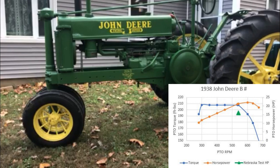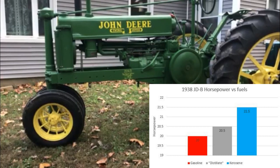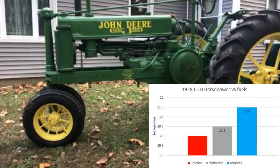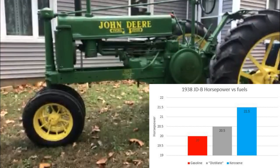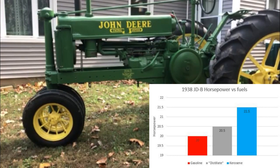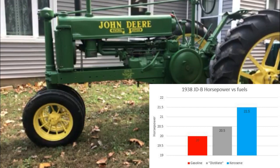Looking at horsepower versus fuels on the John Deere, we actually kind of see the opposite story of what we saw on the Allis Chalmers. I think that can be attributed to the higher power density you get from the distillate and from the kerosene fuel, but could also be due to the carburetor being a little bit rich for gasoline and burning the right amount of fuel for the kerosene and distillate — and because of the heat-exchanging manifold that the John Deere has, making it more capable to burn these heavier fuels, since it was designed to burn distillates.